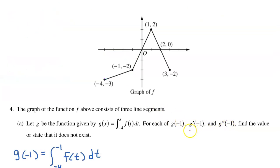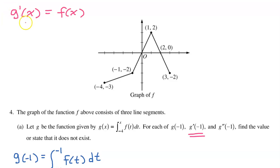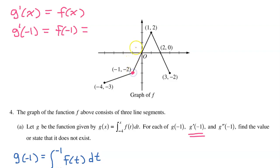Now let's find g prime at negative 1. When you take the derivative of an integral defined function, that's where the second fundamental theorem of calculus comes in. g prime will simply equal f of x. So if g prime of x equals f of x, then g prime at negative 1 equals f at negative 1. We have a graph of f right here, so it's easy to find the value. Going to negative 1 on the graph, we see it is at negative 2. So g prime at negative 1 equals negative 2.